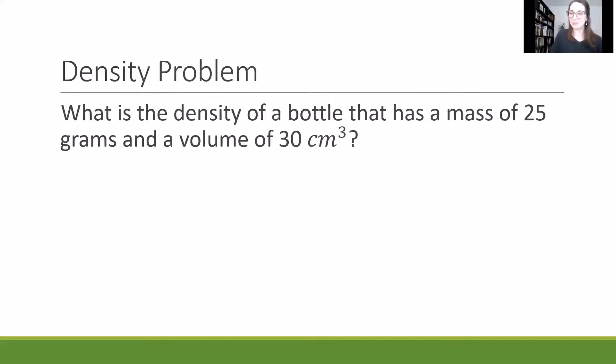Let's look at an example of that. What is the density of a bottle that has a mass of 25 grams and a volume of 30 cubic centimeters? Well, to figure that out, we'll use our formula. So let's plug in the information. We know the mass is 25 and the volume is 30. So we'll do 25 divided by 30, which is 0.83.